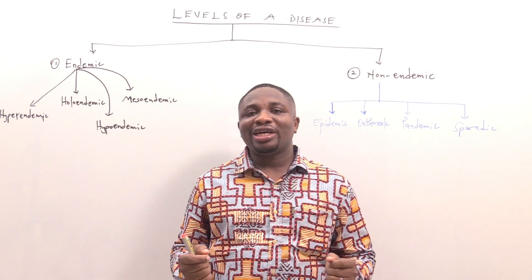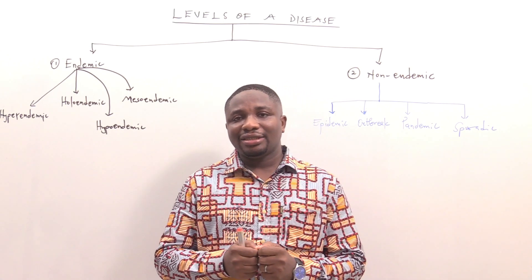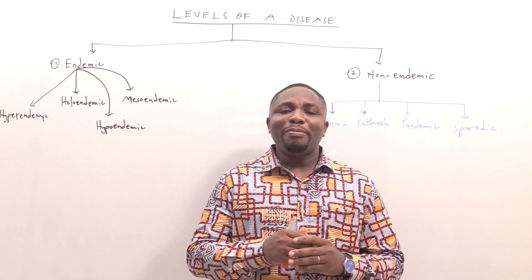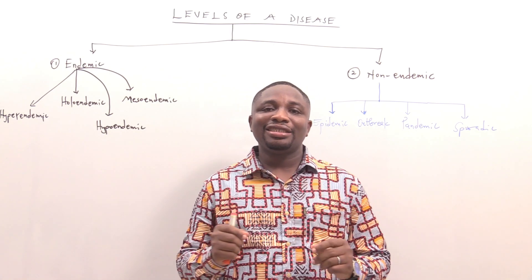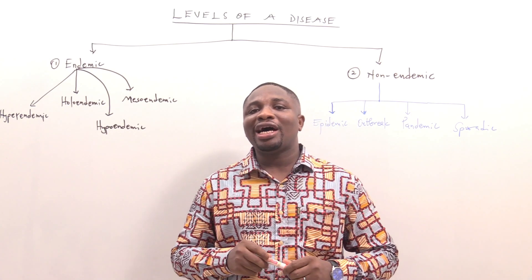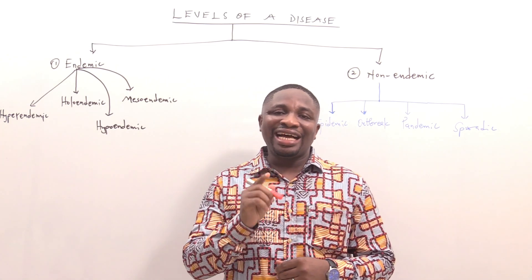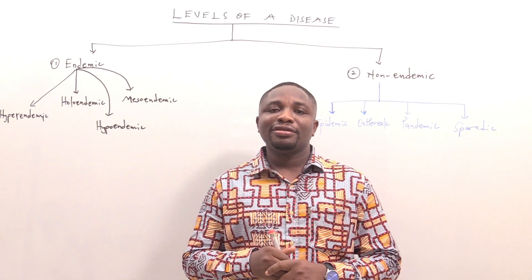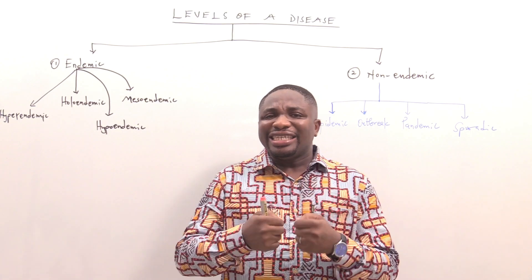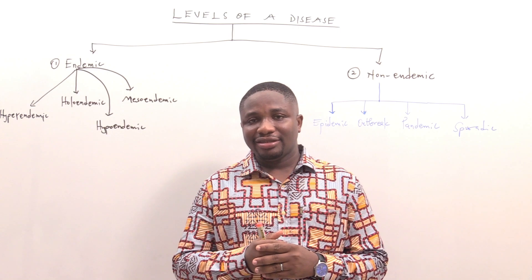The level of a disease is dependent on the occurrence, the incidence, the prevalence, and the intensity of the disease in that particular geographical location, or in that particular community, or in that population. So we can say that the level of a disease is indeed an analysis of a population under study.